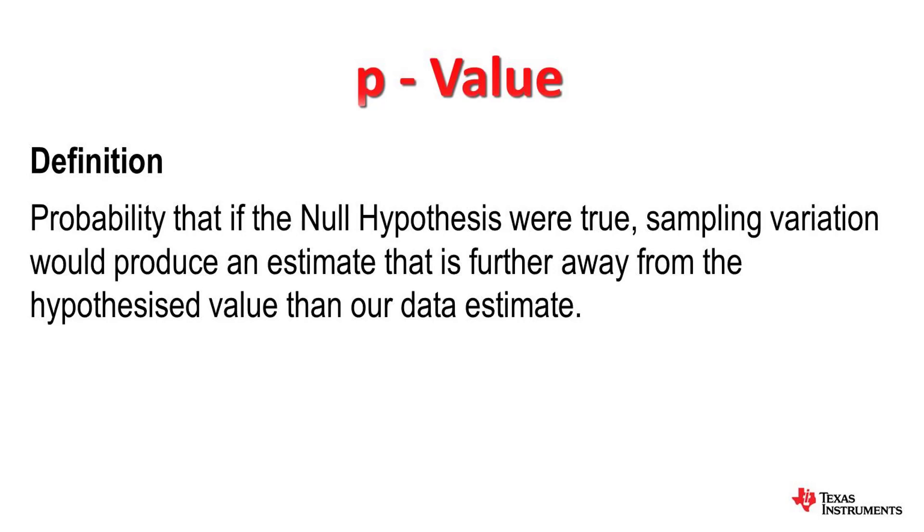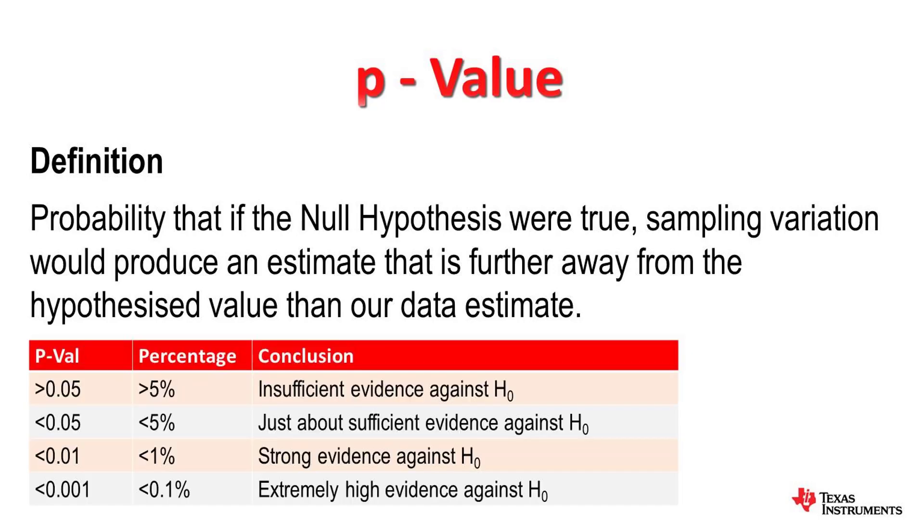This table is a guide. If the p-value we obtain is greater than 0.05, then there is insufficient evidence against the null hypothesis and we would continue to accept the null hypothesis. However, if the value is less than 0.05, then we accept the alternative hypothesis.